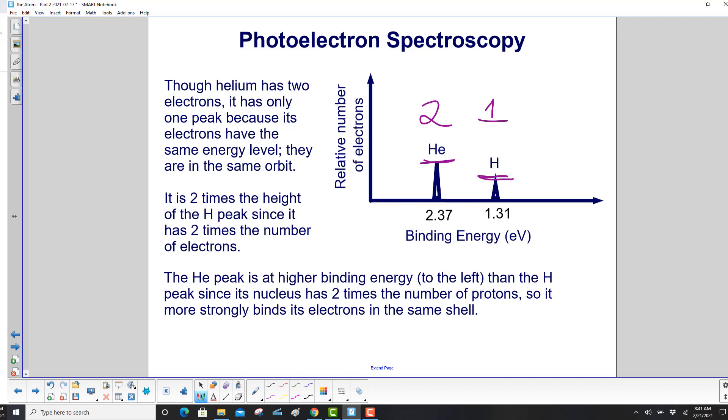The helium peak is at a higher binding energy to the left than the hydrogen peak, since its nucleus has two times the number of protons. So it more strongly binds its electrons in the same shell.